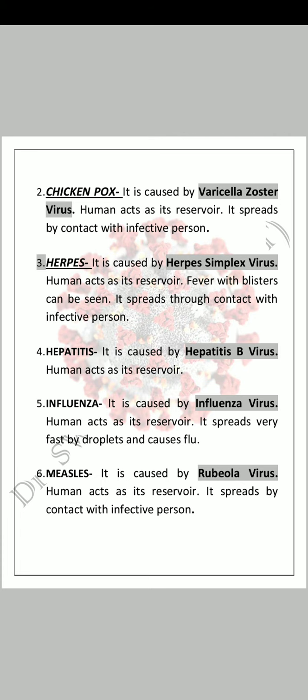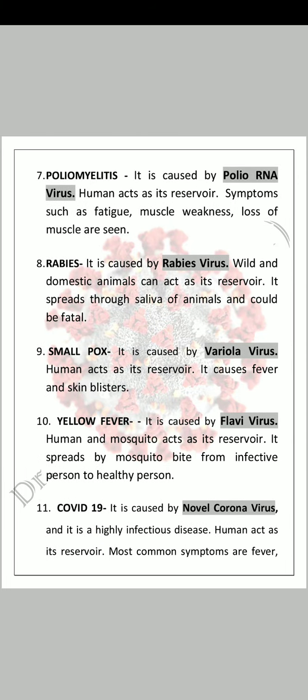Influenza میں بھی human beings reservoir ہوتے ہیں۔ اگر کسی کو viral یا influenza ہوا ہے اور وہ کھانس رہا ہے یا چھینک رہا ہے تو اس سے contact میں آنے والے healthy human being کو بھی infection ہو سکتا ہے۔ Next is measles. It is caused by rubella virus. Human is its reservoir and it spreads by contact with infected person. Next is poliomyelitis. It is caused by polio RNA virus. Polio پہلے India میں بہت زیادہ تھا لیکن اب 100% eradicate ہو چکا ہے، اسی لئے اس کے اتنے زیادہ awareness campaigns ہوتے ہیں - polio virus بہت infectious ہے۔